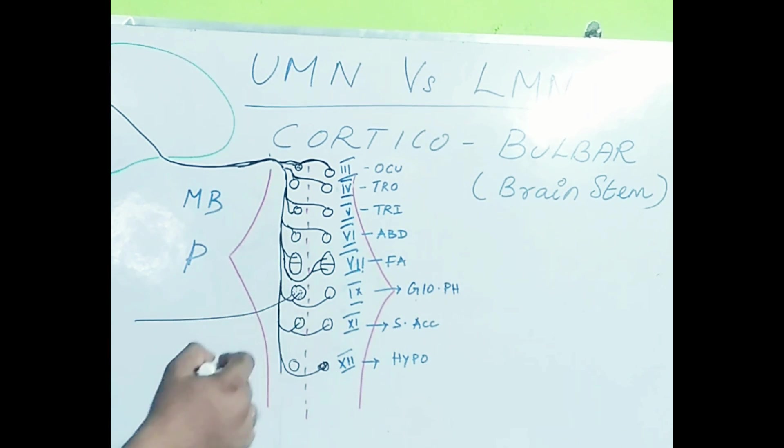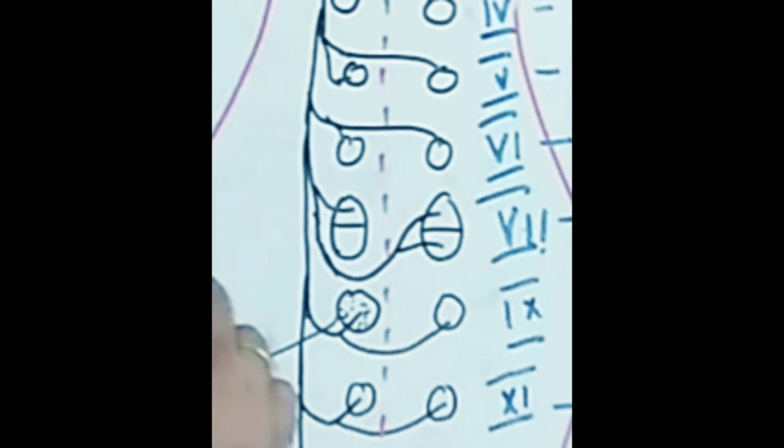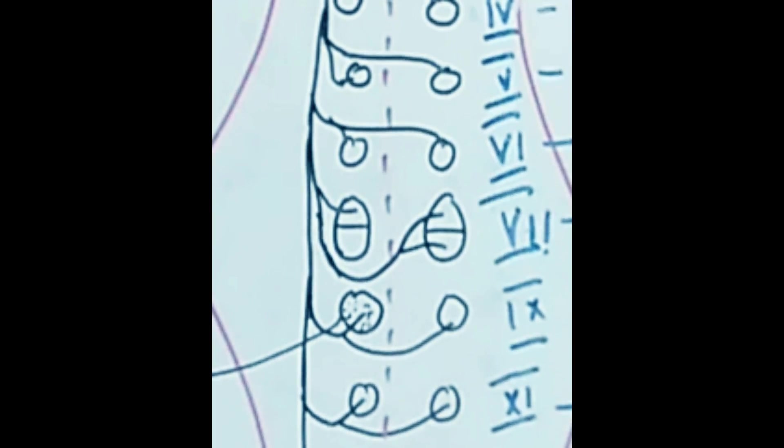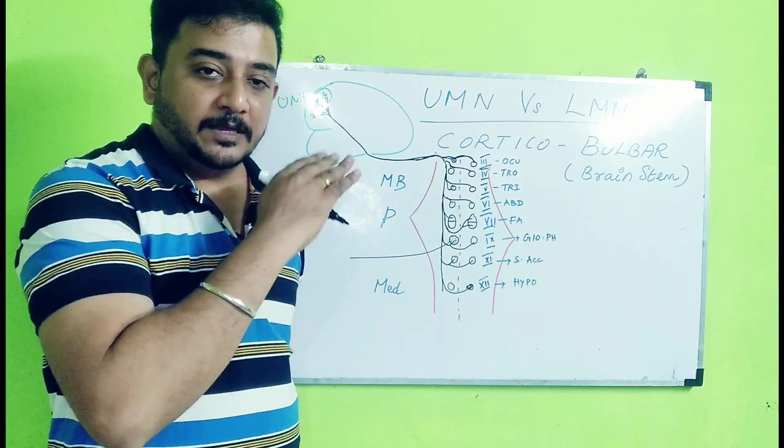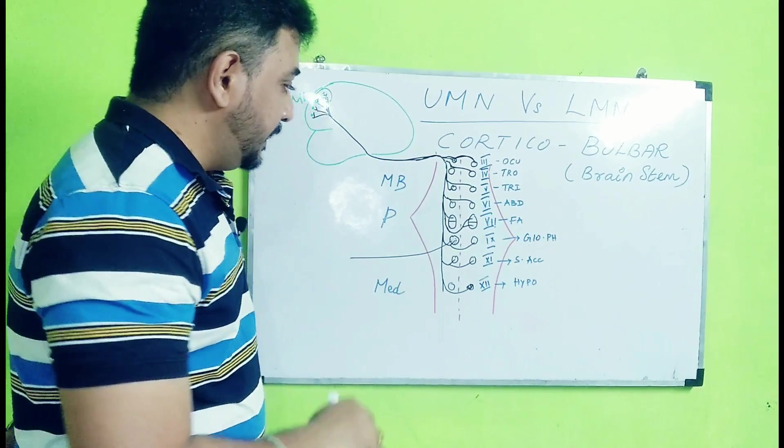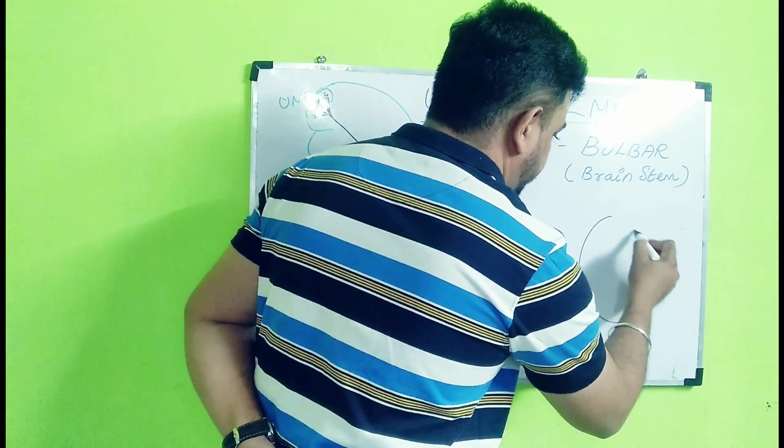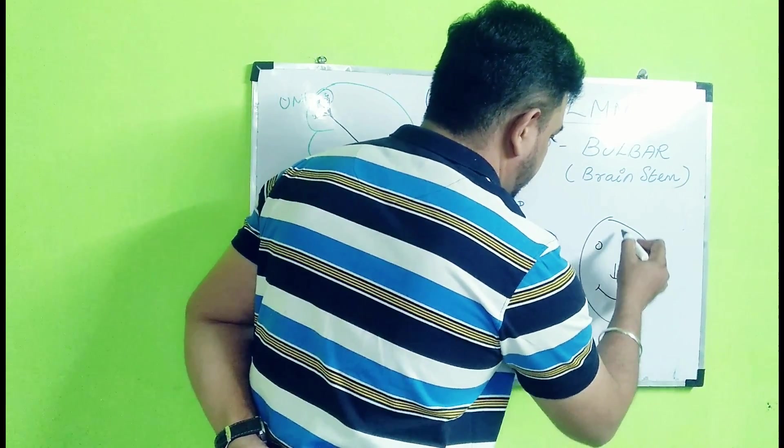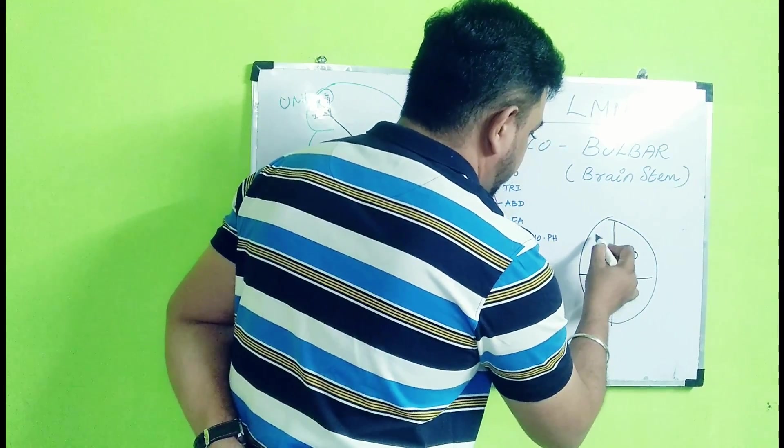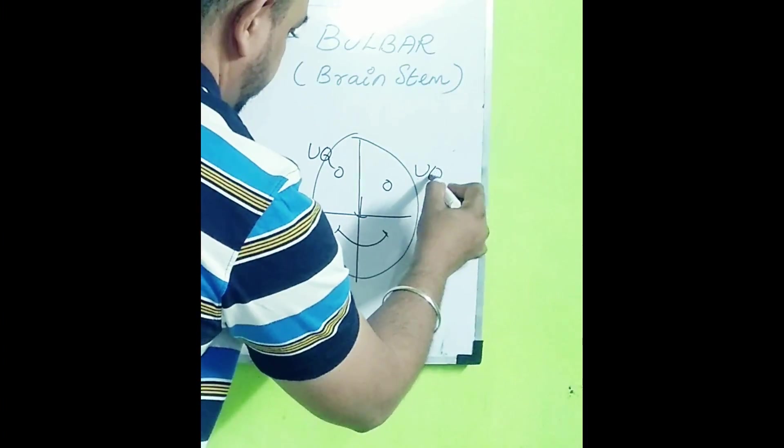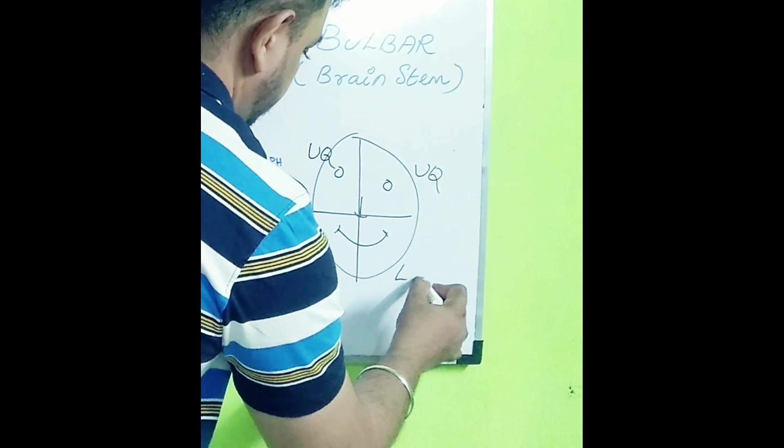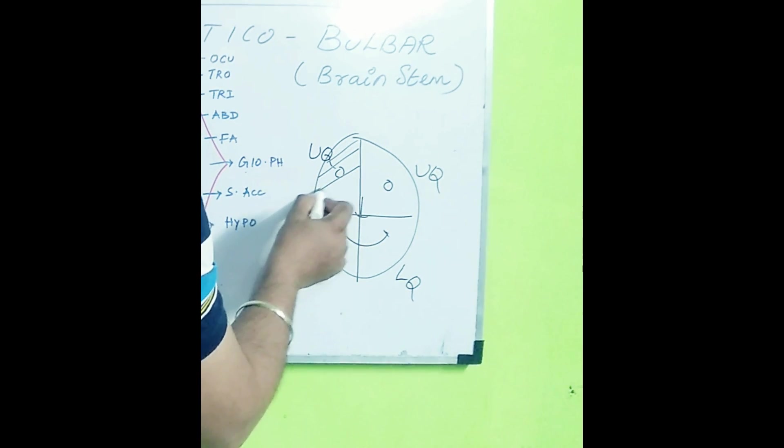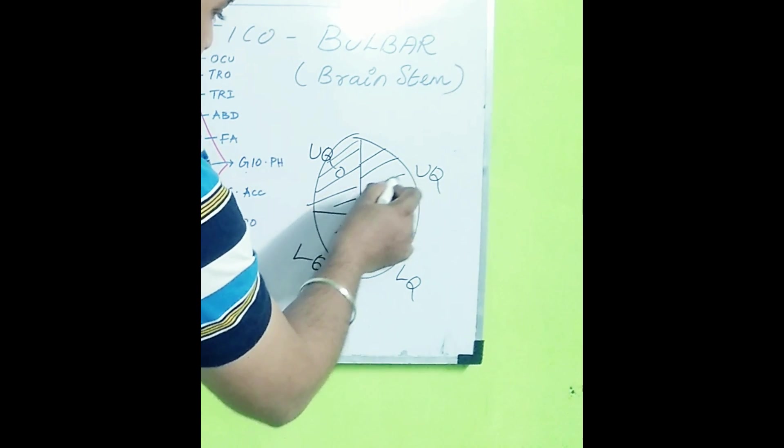But when it comes to the facial nerve, here there is another twist. The facial nerve can be divided into upper quadrant and lower quadrant based upon the facial distribution. So this is the upper quadrant and this is the lower quadrant. This is the opposite side upper quadrant and lower quadrant, if you divide the face into four quadrants.